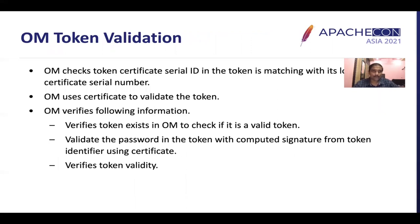Let's understand how OM token validation happens. OM checks that the token's certificate serial ID matches the certificate it has received from SCM. If the certificate serial ID matches the local certificate serial number, it is a valid token issued by this Ozone Manager. OM then uses this certificate's public key to validate the token signature. OM verifies three things: first, that the token exists in the OMDB; second, it validates the password in the token against the computed signature from the token identifier using the certificate; third, it checks the validity of the token. If all three steps succeed, the client is allowed to access Ozone Manager.